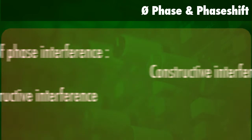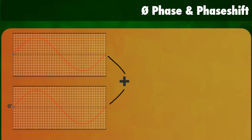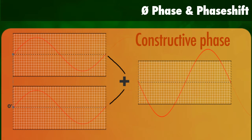When we add two identical waves together at zero degree phase shift, we get a constructive interference, and this results in a doubled amplitude. You can see that the sound is louder — it actually builds up the amplitude.